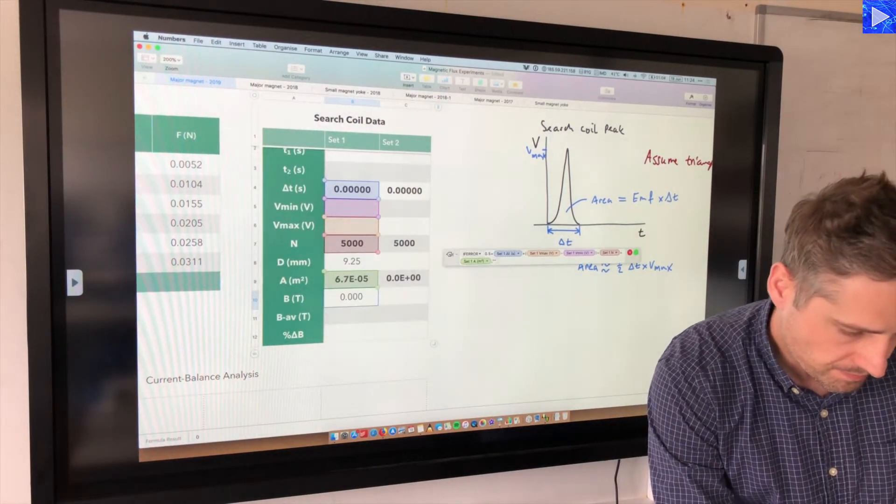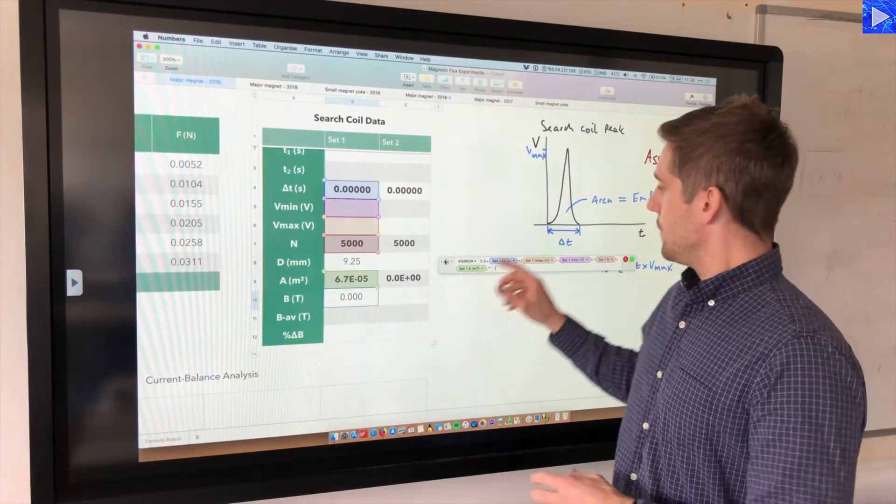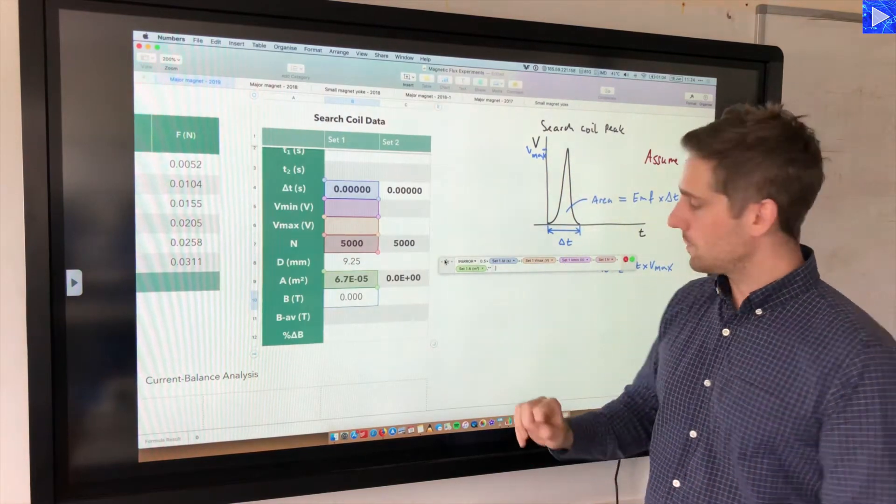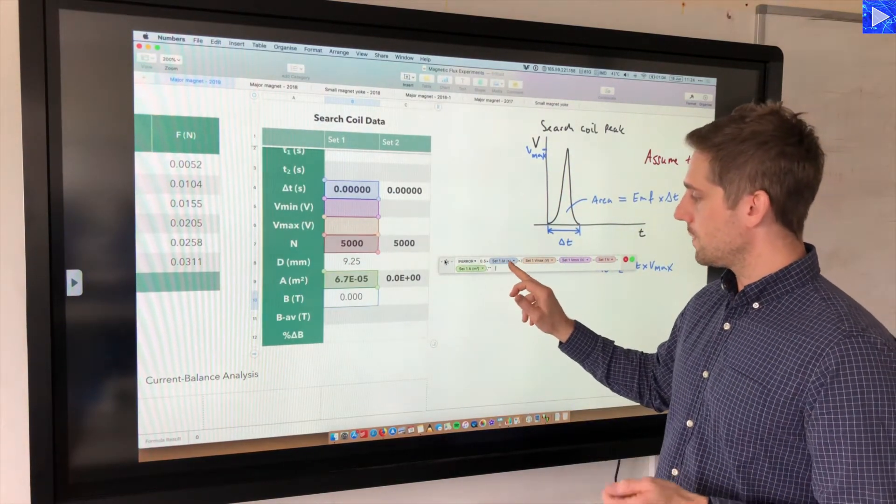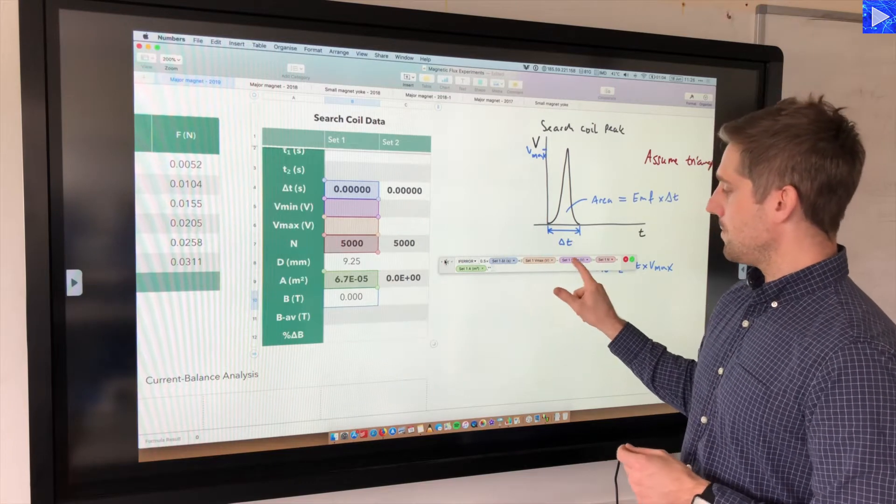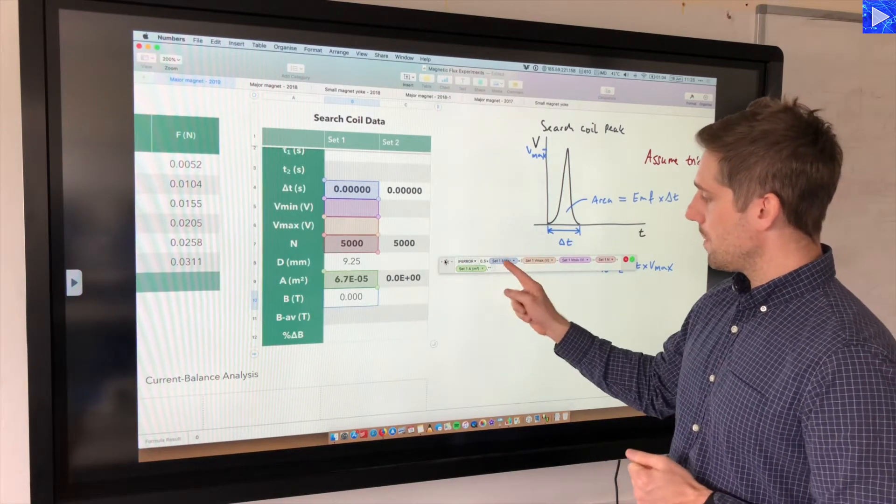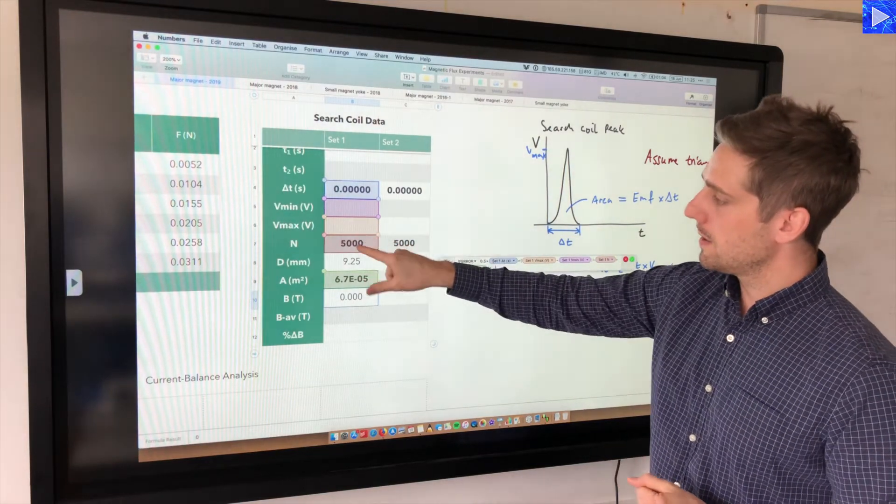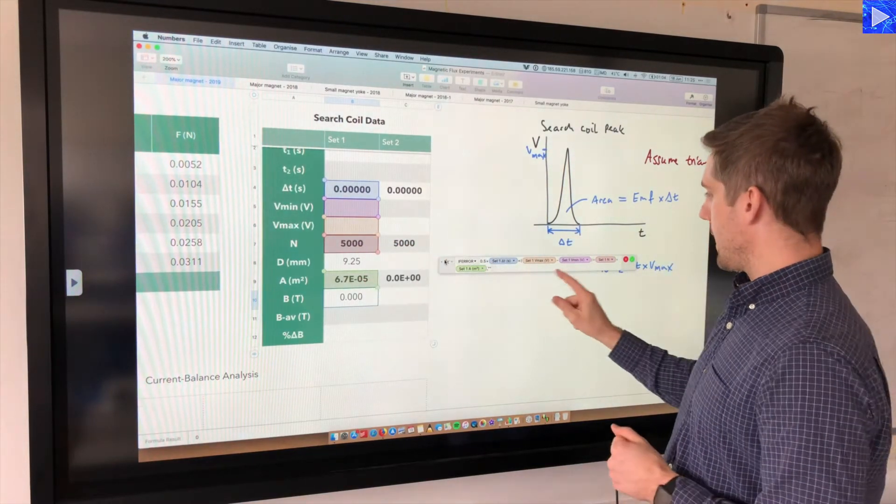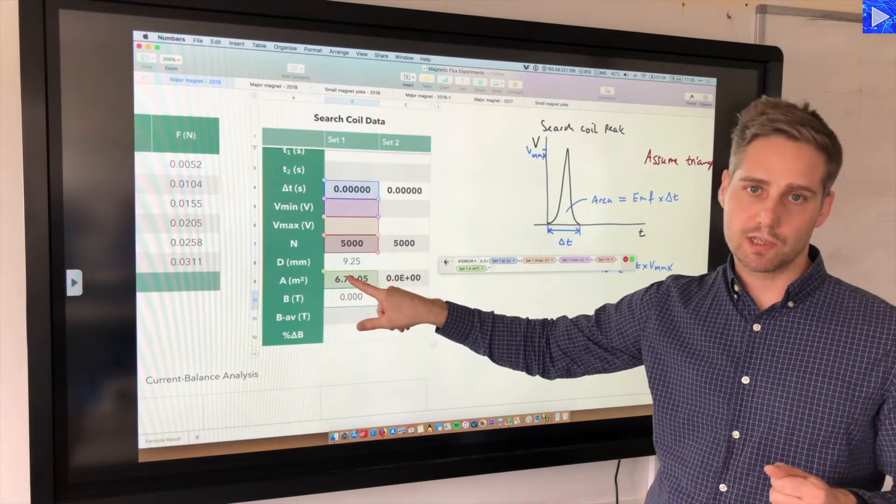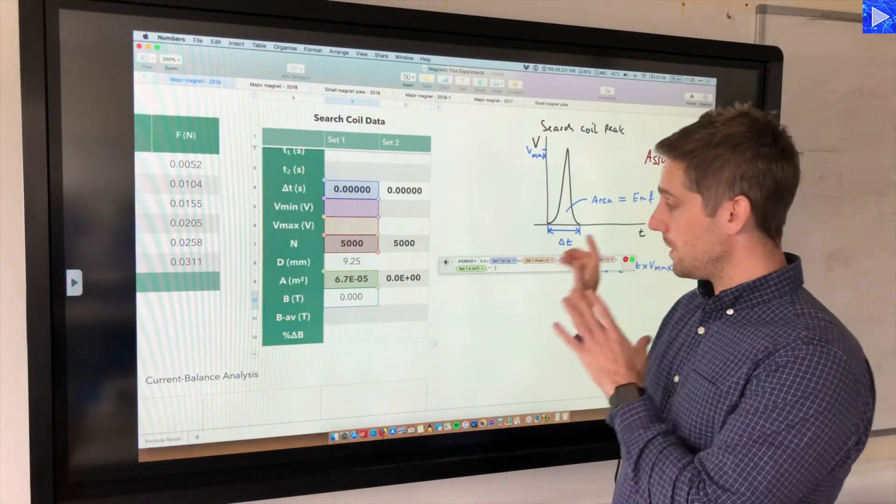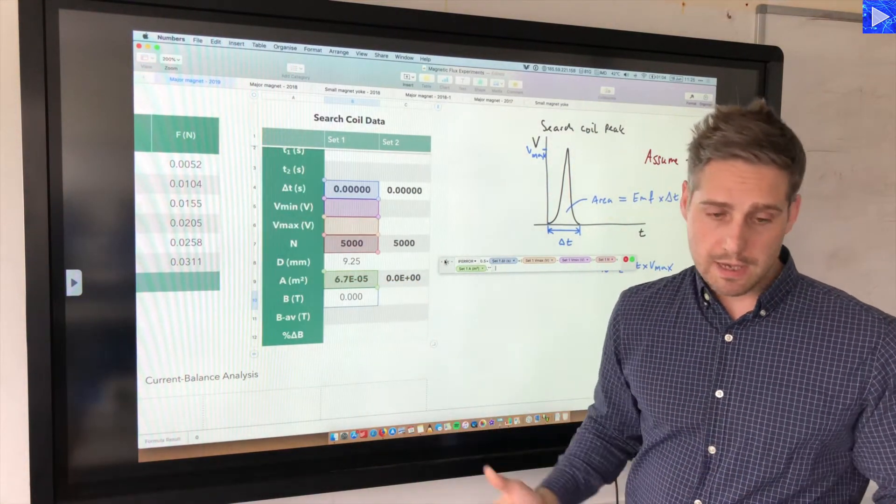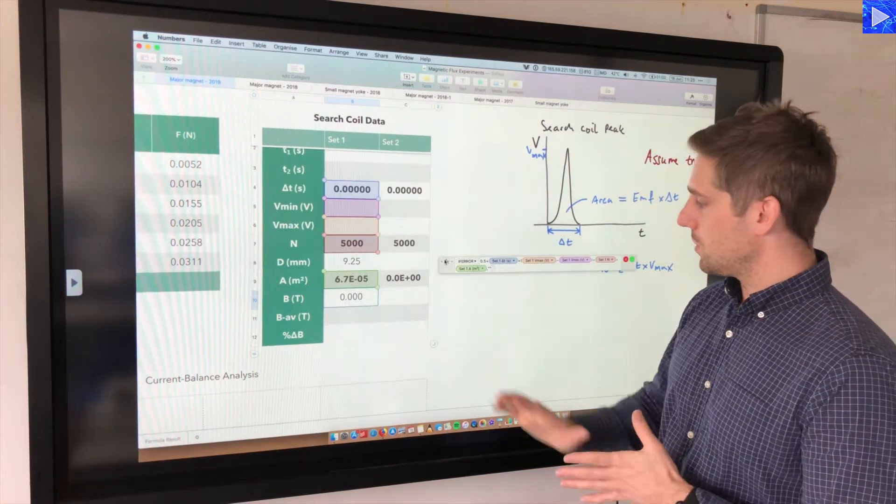For B, the area of the triangle is half base times height. So 0.5 times delta T times v_max minus v_min, so base times height, and then divided by N and divided by the cross-sectional area. That's how the formula is actually working, just like I showed you over there. The equation's quite straightforward.